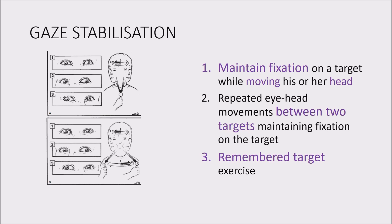Dr. Bhatt spoke about gaze stabilization in the morning. There are three ways of doing it. First, you have a fixed target and move your head while looking at it. Second, you have two targets — you move only the eyes, then move the targets in the opposite direction of your eye. Third is what we call the remembered target: a target is placed in front, you look at it, close your eyes, shake your head, then open your eyes fixing on the target. This requires cervical and central inputs.